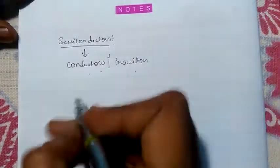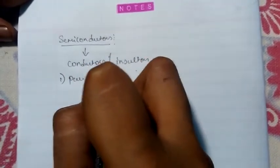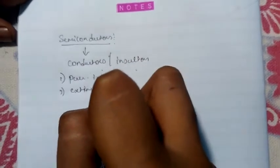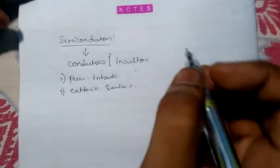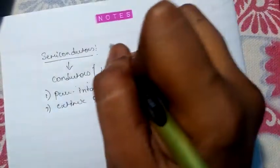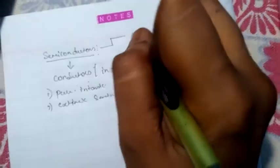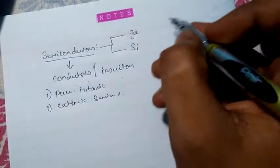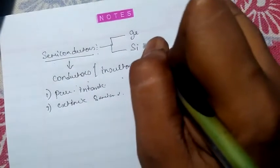There are two types of semiconductors: one is pure semiconductor, that is intrinsic semiconductor, and another is extrinsic semiconductor. The most commonly used semiconductor materials are germanium and silicon.